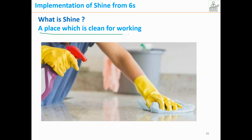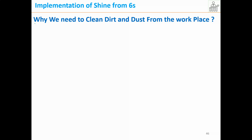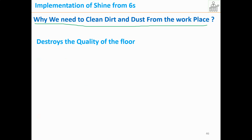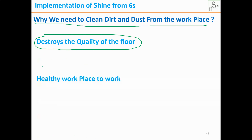Then we display the not-required items in a sheet, item-wise, and people who knowingly or unknowingly kept items there will take them back. That is how we implement Sort. The next S is Shine. Shine means a place which is clean for working. We need to clean dirt and dust from the workplace — dirt and dust in the workplace destroys the quality of the floor.